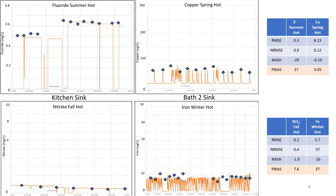For the calibration results, we will focus on the comparison of percent bias (P-bias). Shown here are results for the hot water system at two fixtures — the kitchen sink and the second floor bathroom sink — for copper, iron, and nitrate, which were arbitrarily selected. Fluoride was also modeled as a species known to be conserved throughout the system, so fluoride calibration values were used as a benchmark. The P-bias for fluoride was 27%. Copper and nitrate had values much lower than that, and iron had a value slightly larger but close to the fluoride P-bias.